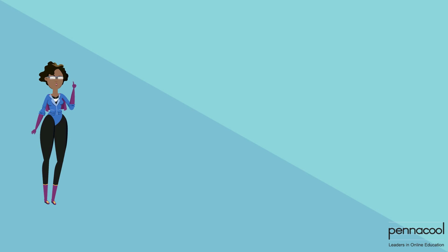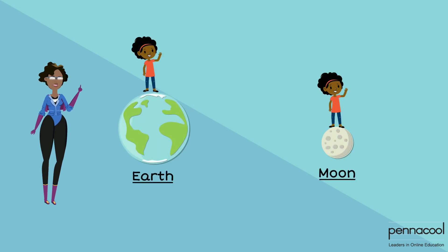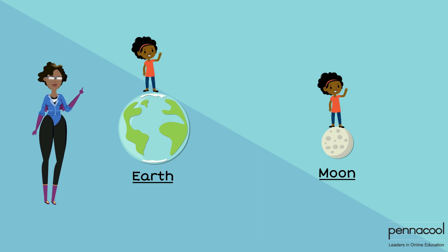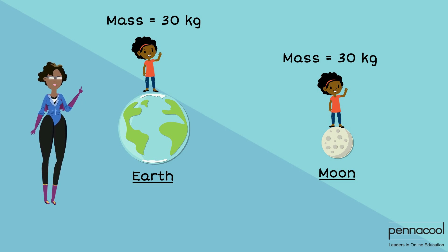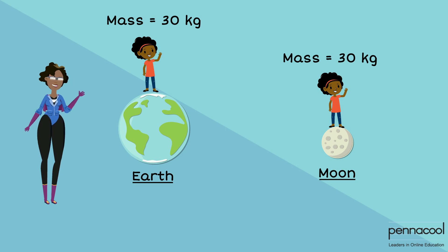Let's look at a brief example. Delicia has a mass of 30 kilograms. Her mass would not change if she were on the moon or on Earth — she has the same mass wherever she goes. However, if she went to the moon, her weight will change as there is no gravity acting on her on the moon.